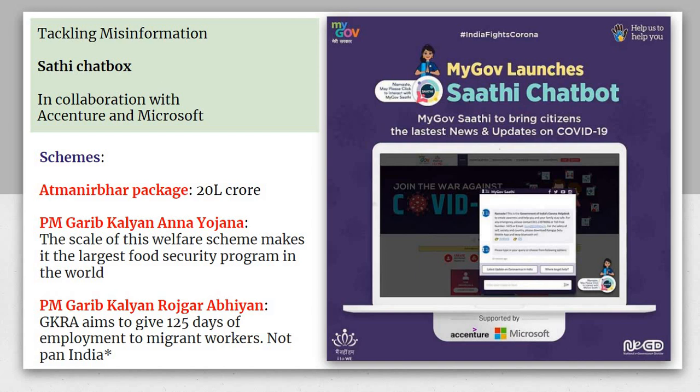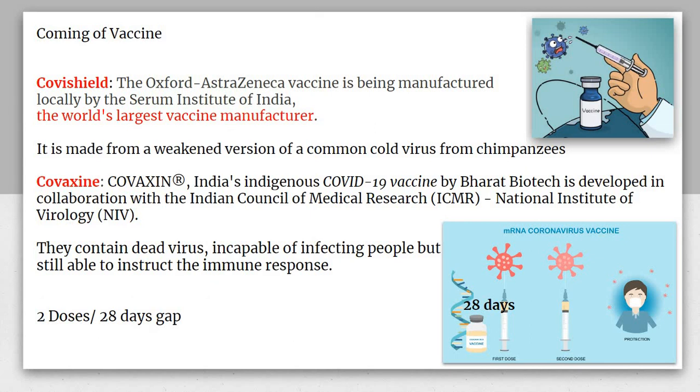Coming to the PM Garib Kalyan Rojgar Yojana, its aim was to provide migrant workers with 125 days of employment. One important thing is that it is not a Pan-India scheme — it is only for states where migrant workers are concentrated, such as Uttar Pradesh, Bihar, and Madhya Pradesh.